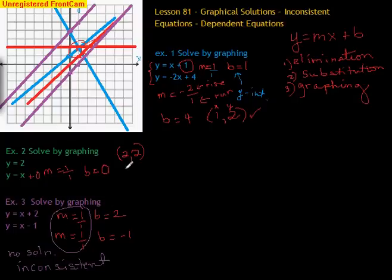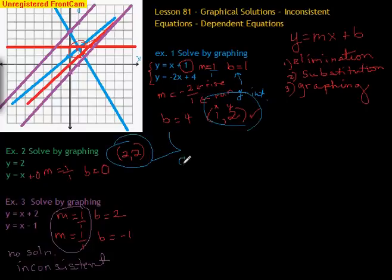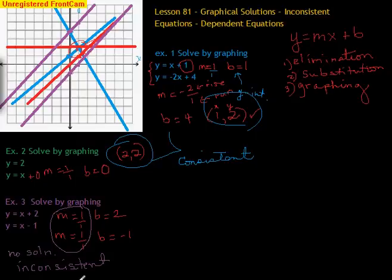If there is a solution, like these two examples earlier that had a solution, those two would be consistent. So: inconsistent means the slopes are the same, the lines are never going to intersect, and there's no x and y values that will make both of those equations true.